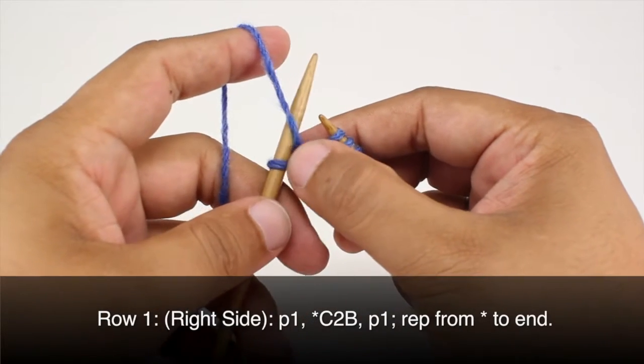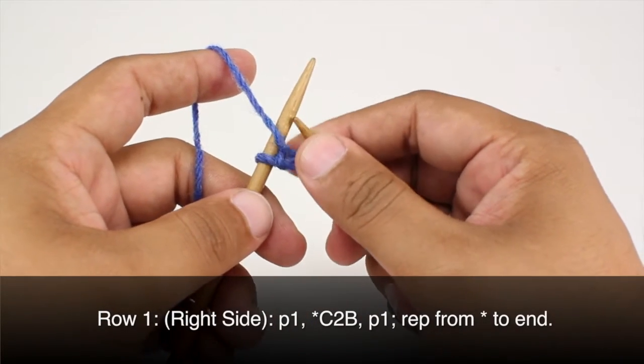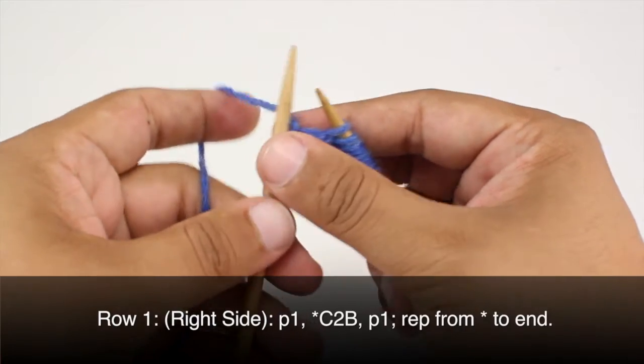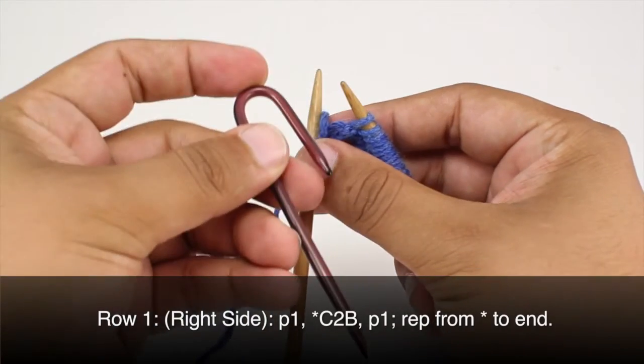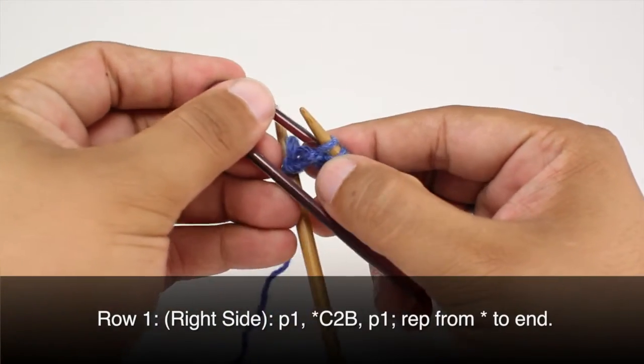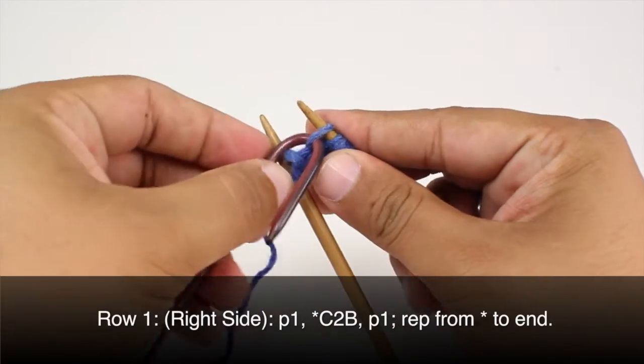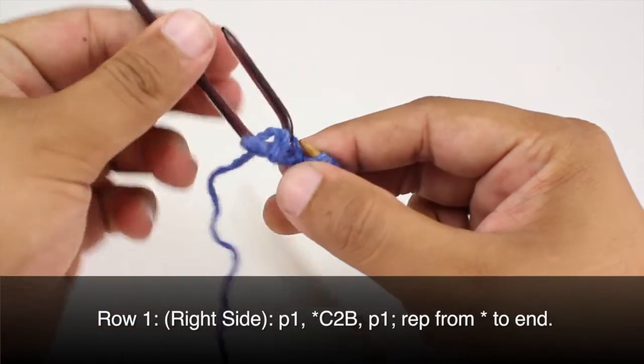Then we are going to do a cable to back to begin our repeat. So we're going to take our cable needle and slip this first stitch onto our cable needle. We're going to hold that behind our work.